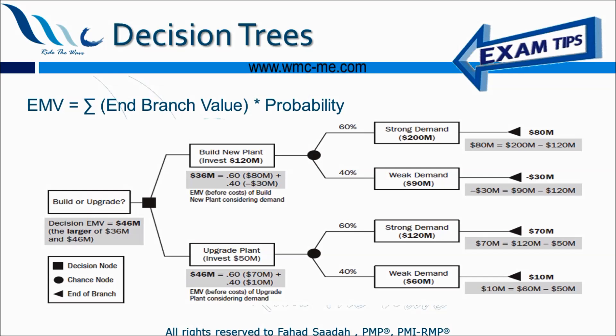Let's look at an example with figures to understand the concept. Assume I have a decision to make: build a new factory or upgrade the existing factory. Let's say I have a production plant and I need to expand my business. Some people suggest building a new plant, others suggest upgrading the existing machinery and equipment. To decide, we quantify it — that's why EMV is a tool and technique for quantitative risk analysis.